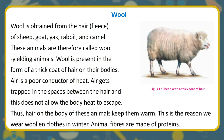Wool is obtained from the hair, or fleece, of sheep, goat, yak, rabbit, and camel. These animals are therefore called wool-yielding animals. Wool is present in the form of a thick coat of hair on their bodies. Air is a poor conductor of heat; it gets trapped in the spaces between the hair and does not allow body heat to escape. Thus, hair on the body of these animals keeps them warm. This is the reason we wear woolen clothes in winter. Animal fibers are made of proteins.